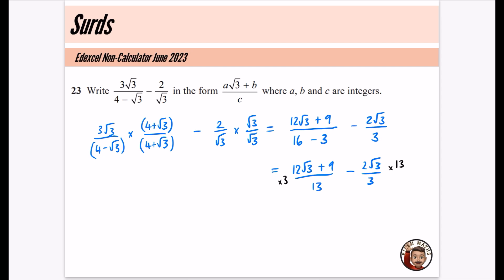And that's obviously 3 over 3 and 13 over 13. So when I times it by 3, I would get 36√3 + 27. And that's obviously now going to be over 39, which is the common denominator we wanted. And when I do the 2√3 times 13, well, we just do the 2 times the 13, which is 26√3 over 39. And so now we've got the common denominator, which is 39. That's the c value that we have in the question. So I have 36√3 minus 26√3. That is just going to be 10√3. And I've still got the plus 27. So I have that as my final answer.